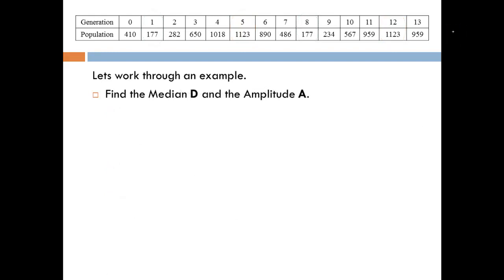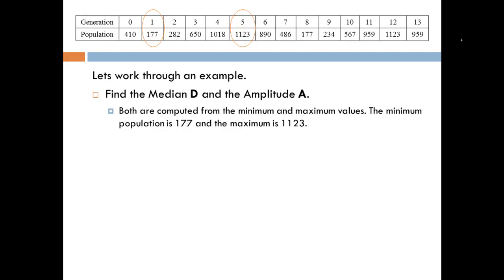Once we have the period and we found B, we can then move on to find the median, which was D, and the amplitude A. Both of these are related to each other by the maximum and the minimum values. If we look at the data, the minimum value was 177 and the maximum value was 1,123. To find the amplitude, we take the difference between the maximum and minimum and divide it by 2. So in this case, that would be 1,123 minus 177, divide that by 2, and that gives us 473. The median is the average of the minimum and the maximum, so it's the max plus the min divided by 2. That would be 1,123 plus 177, divide that by 2, and that gives us a median value of 650.